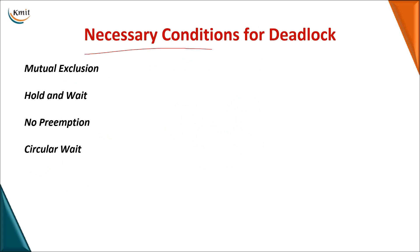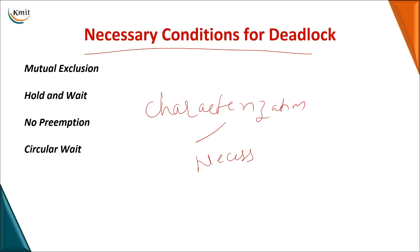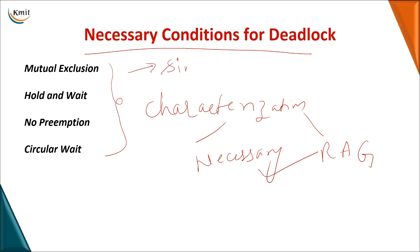Deadlock is permanent blocking of processes where none of them can continue with their execution. In deadlock characterization, we deal with two topics: the necessary conditions for a deadlock to occur, and the resource allocation graph. For a deadlock to occur, all four necessary conditions must be simultaneously present.